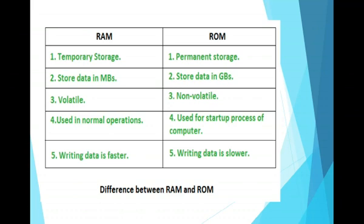On the other hand, with ROM, our data is not lost — it is stored permanently. RAM writes data very fast but ROM writes data very slowly.